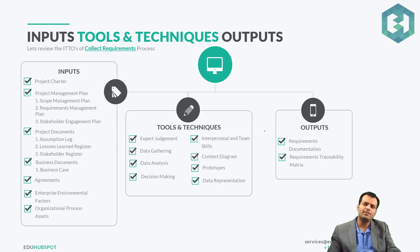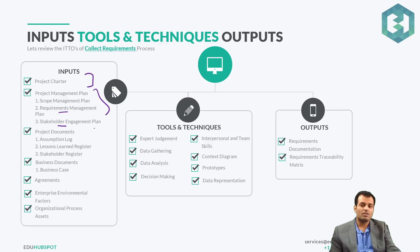Now let's talk about the ITTOs. First we have the project charter. On the project management plan we have scope, requirements, and stakeholder management plans — all three very important. On the document side, we have the assumption log, lessons learned register, and stakeholder register. Business documents include the business case. We also have agreements, since we deal with sellers, and finally the EEF and OPA.